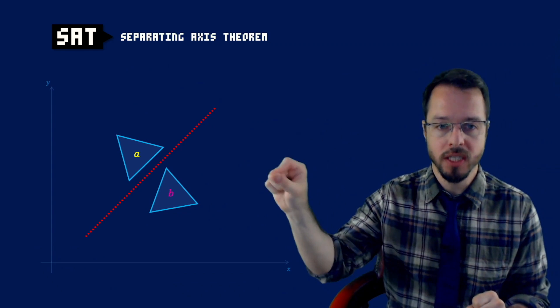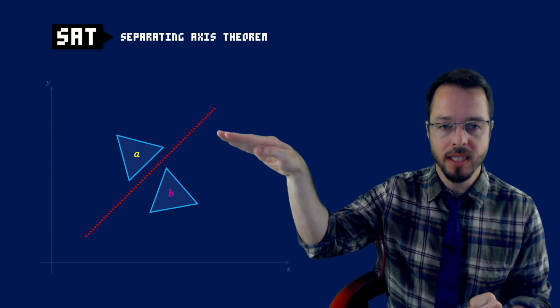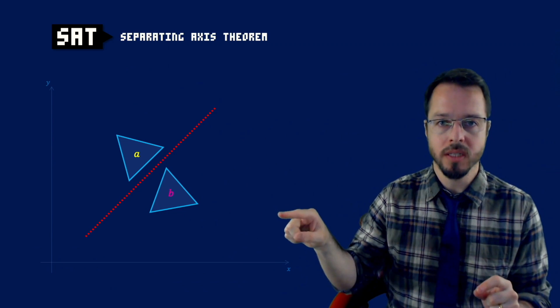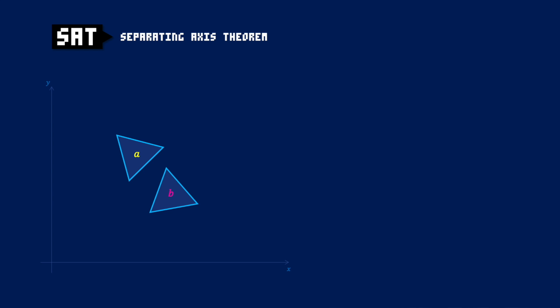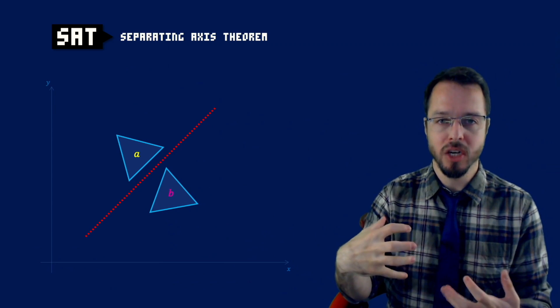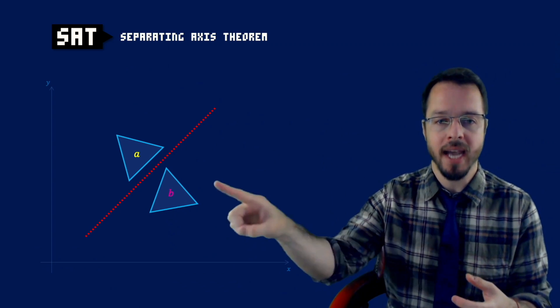I want to start dissecting what the SAT is all about. We're going to have an object A — a triangle A — with vertices and edges, and a triangle B with its own vertices and edges. The SAT states that if we can find an axis that is separating those two objects, then those two objects are not colliding. It's super easy for the human brain to look at this scenario and find that axis. But how can we formalize this in terms of a function?